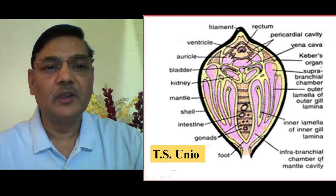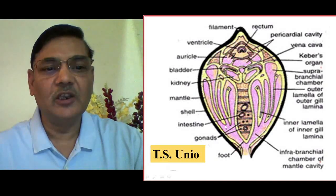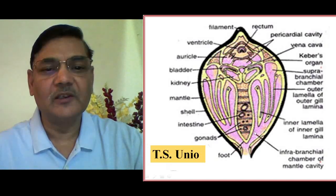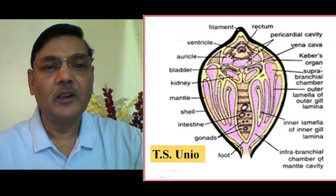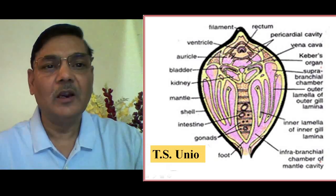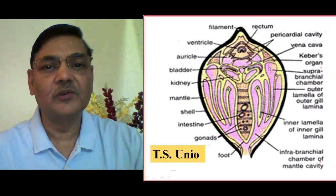On the upper side of the gill laminae, suprabranchial chambers are located. There are four suprabranchial chambers, and the lower space is referred to as the infrabranchial chamber of the mantle cavity. Now, the location of Keber's Organ is situated on the upper side of the suprabranchial chamber.